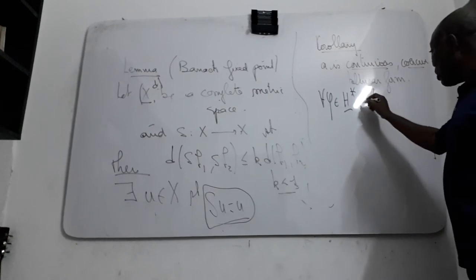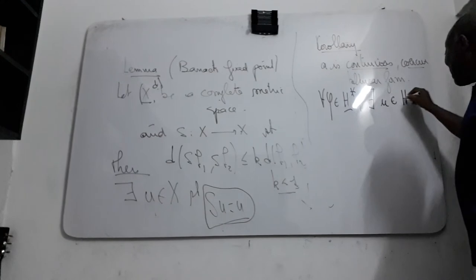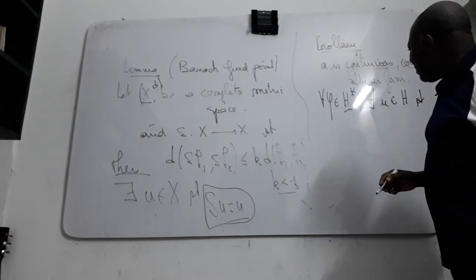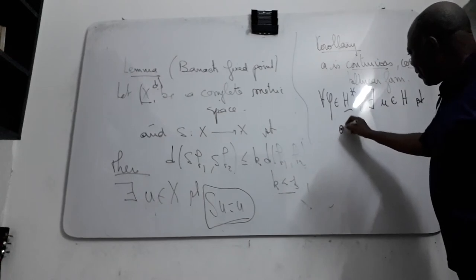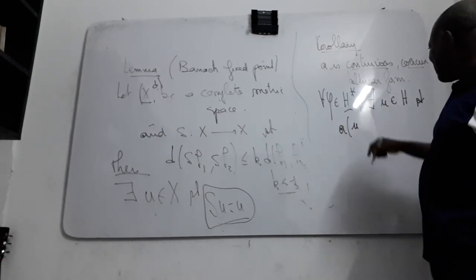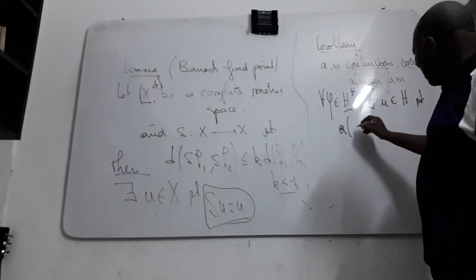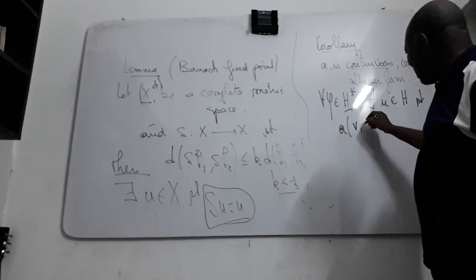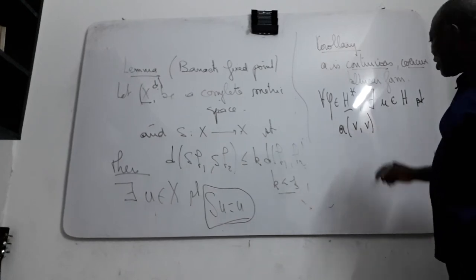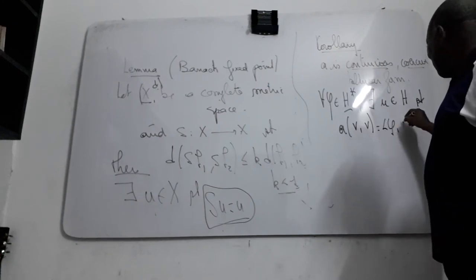And also for all phi you take in the H dual of H, there exists also this one U with the element of H such that you have this condition, such that you have this A and U, V like this is equal to phi of V.